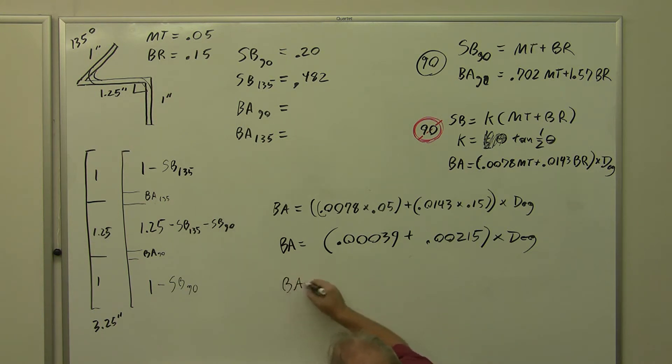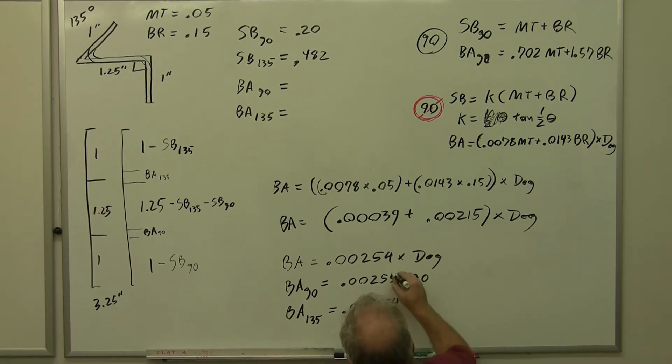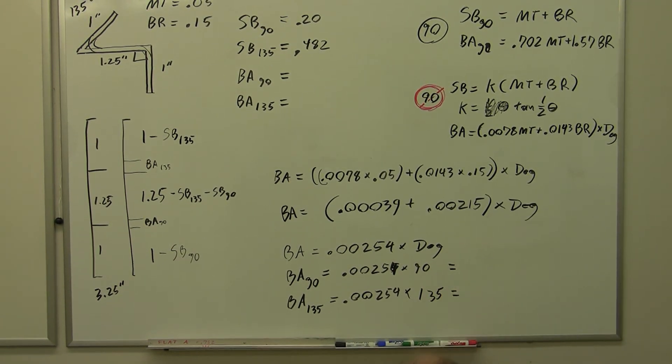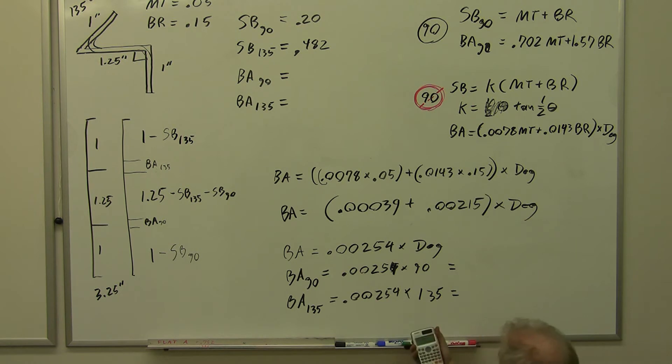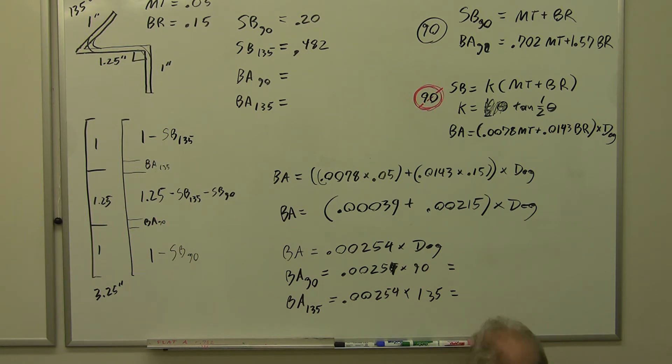Now let's put these together. 0.00215 plus 0.00039 equals 0.00254. Bend allowance equals 0.00254 times degrees. So bend allowance 90 equals 0.00254 times 90, and bend allowance 135 equals 0.00254 times 135. So let's go ahead and put those in.